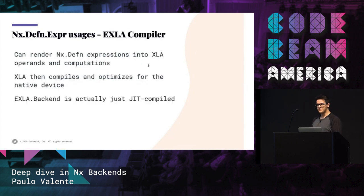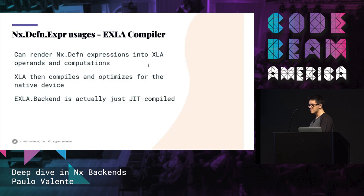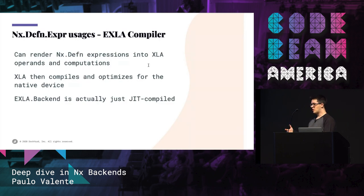For the EXLA, what happens is that we feed that symbolical representation into XLA, which will then convert the computation graph into a specific computation for a given device. So it can compile the code for the GPU, it can compile the code for the CPU, and then you have lots of optimizations that TensorFlow also leverages. The EXLA backend module is a backend you can use for runtime testing and validation — it's a just-in-time compilation of this whole process, building a DEFN expression, compiling to the CPU for instance, and then executing at the same time.